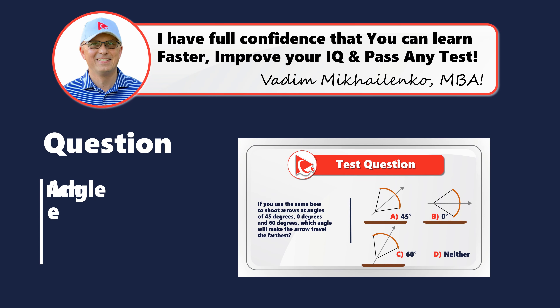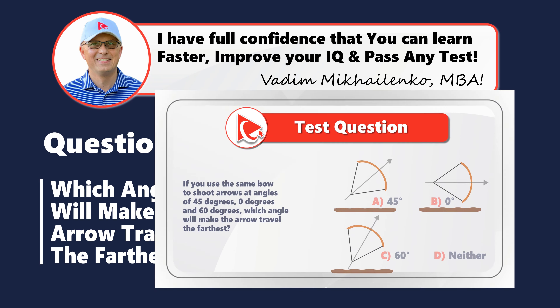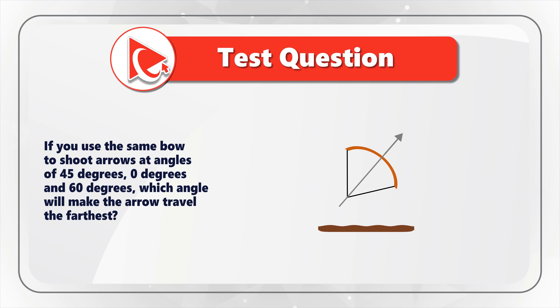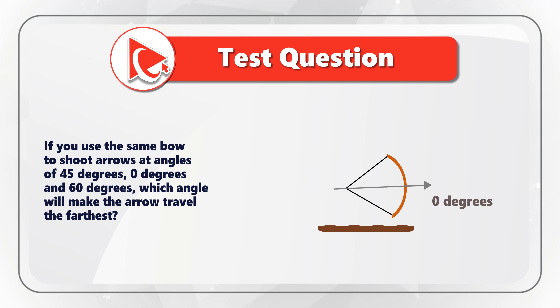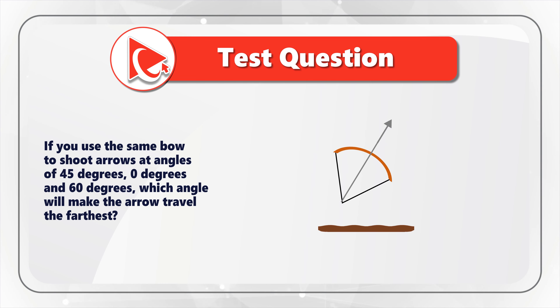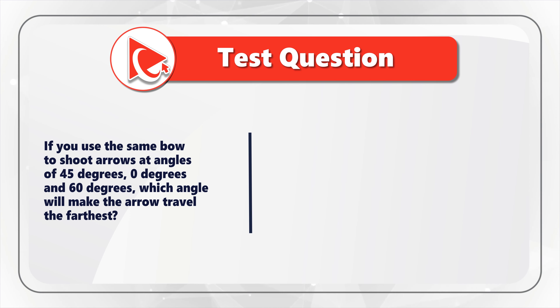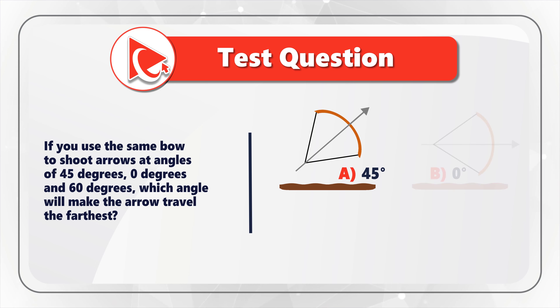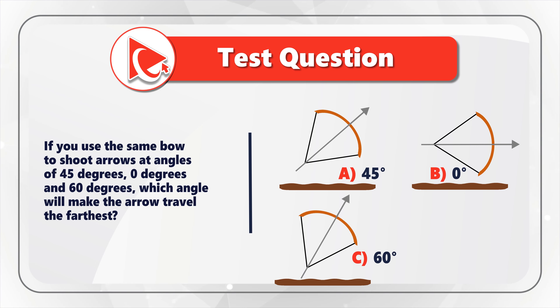Let's get started. This question is not just about engineering, but also about critical thinking and analytical skills. If you use the same bow to shoot arrows at angles of 45 degrees, 0 degrees, and 60 degrees, which angle will make the arrow travel the farthest? You have four choices: Choice A – 45 degrees, Choice B – 0 degrees, Choice C – 60 degrees, and Choice D – neither one. Take a close look to see if you can come up with the answer.